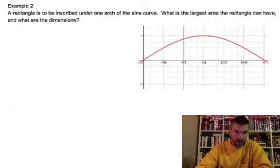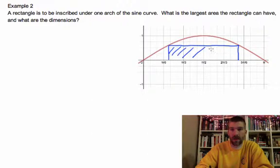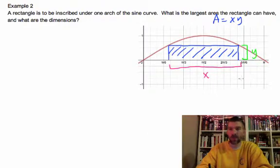So let's just talk about this for one second. I'm going to take and create inside one arch of the sine curve a rectangle. And I want this area to have a max area, so I need to find the area of this rectangle, which means area of a rectangle is going to be x times y. So we'll call this x and we'll call this guy right here y. So we want the largest area the rectangle can have. What would the dimensions be?